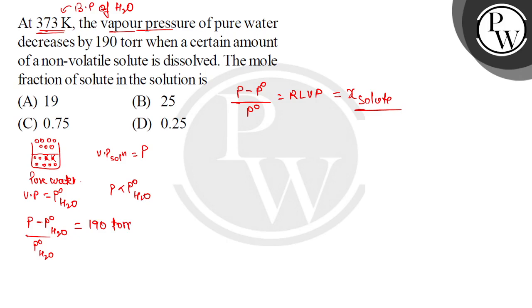But we have to get P naught H₂O. Now boiling point, what temperature is this? The temperature where substance vapor pressure equals external atmospheric pressure. So 373 Kelvin, what is boiling point of water? Here vapor pressure, so P naught H₂O equals atmospheric pressure, 1 atm, and 1 atm equals 760 torr.